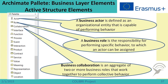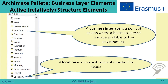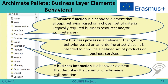At the business layer, active structure elements include actors, which can stand for specific individuals, units, or departments of the enterprise. There are roles, which mainly show the responsibilities of actors. There are also collaborations, which show activities that can be performed only by cooperating between several roles. Additionally, there are interfaces — a business interface is a point of access where a business service is made available to the environment — and location, which is a conceptual point or extent in space.